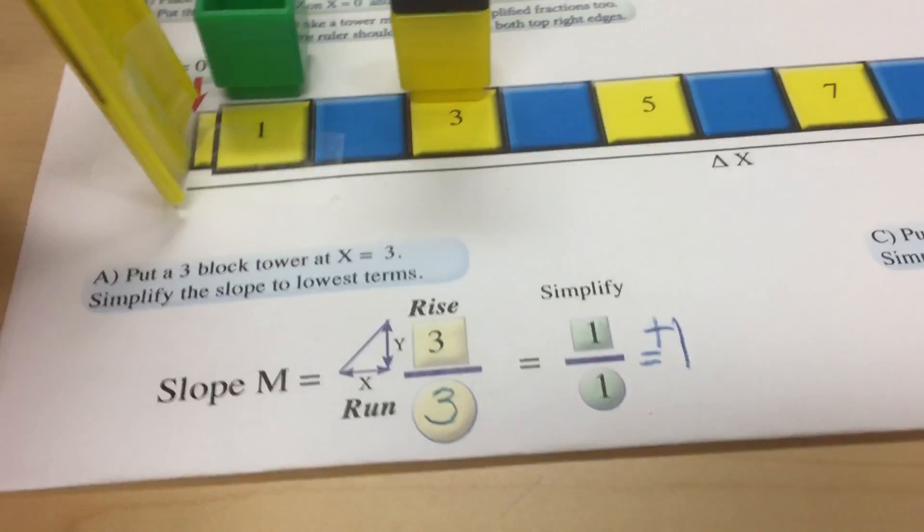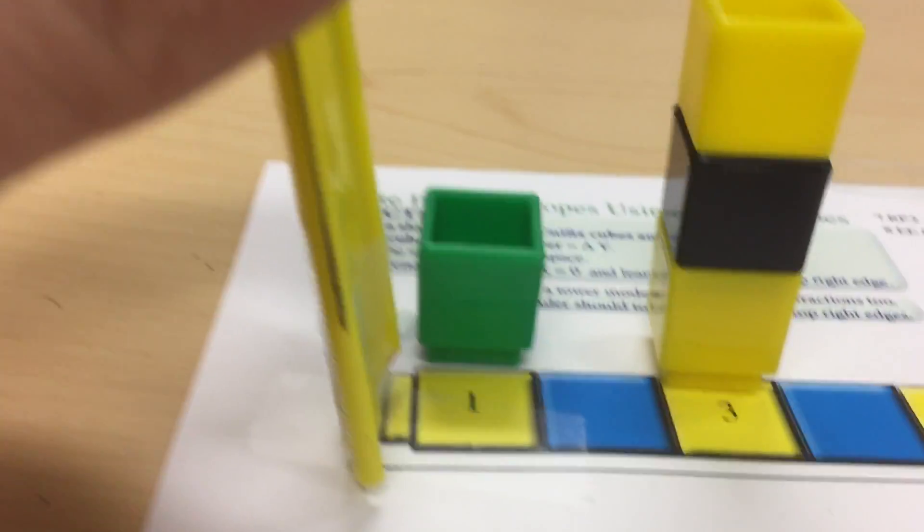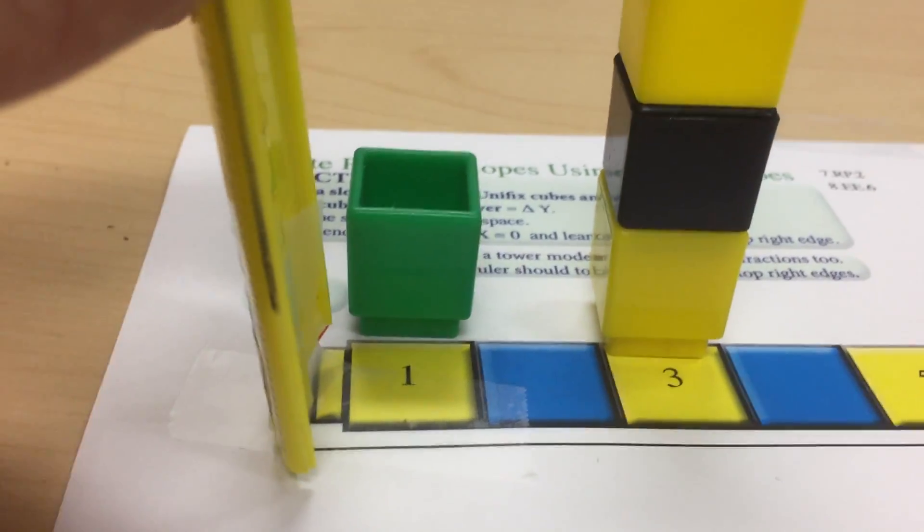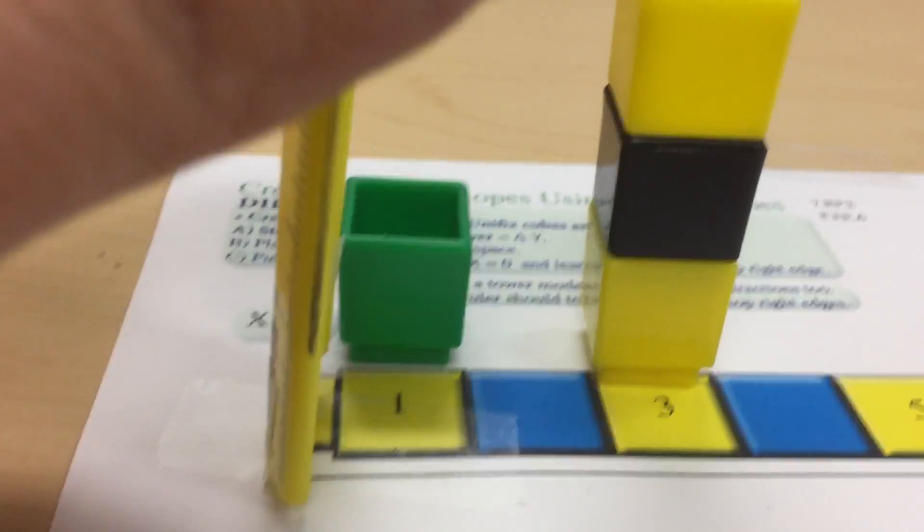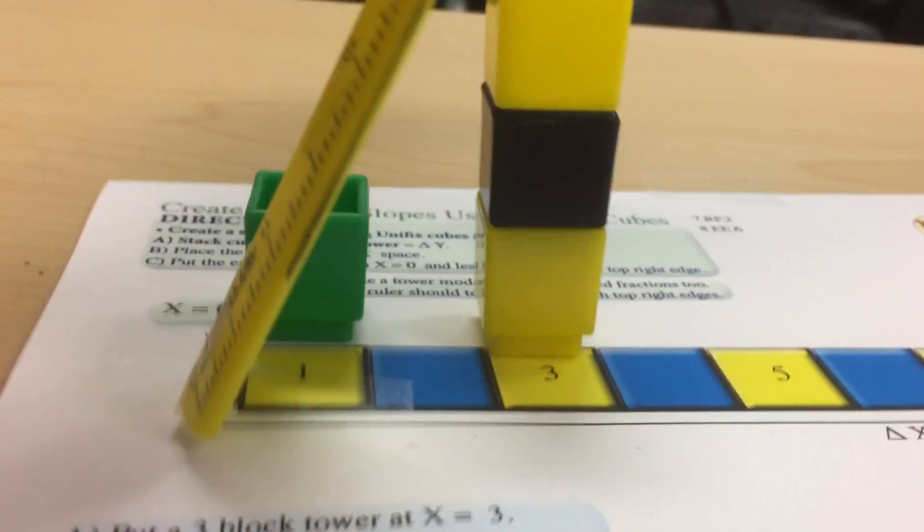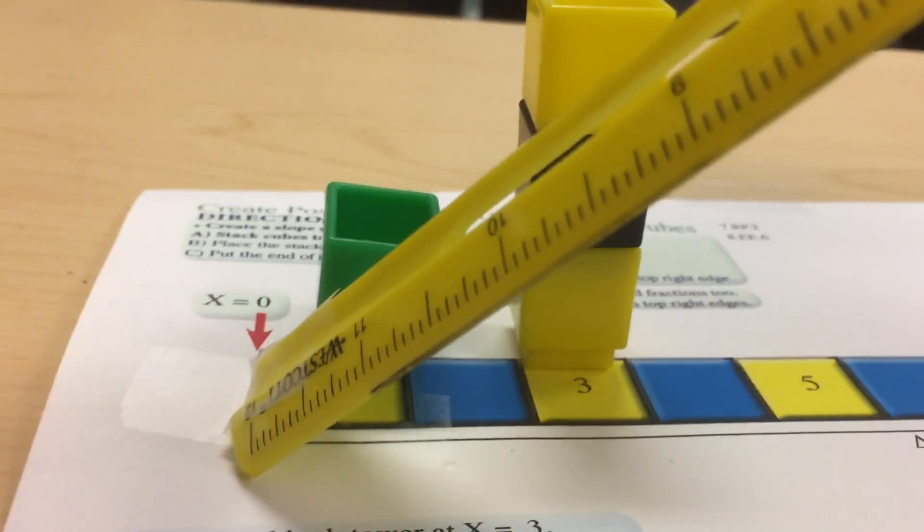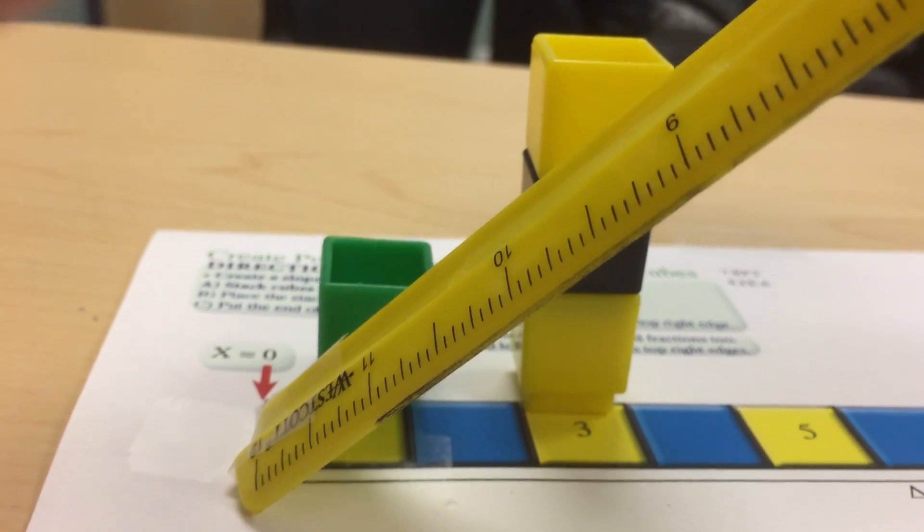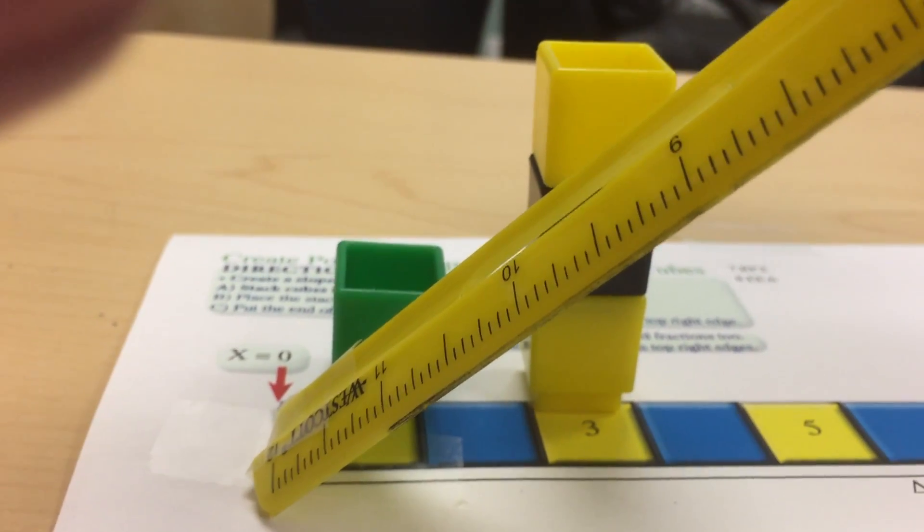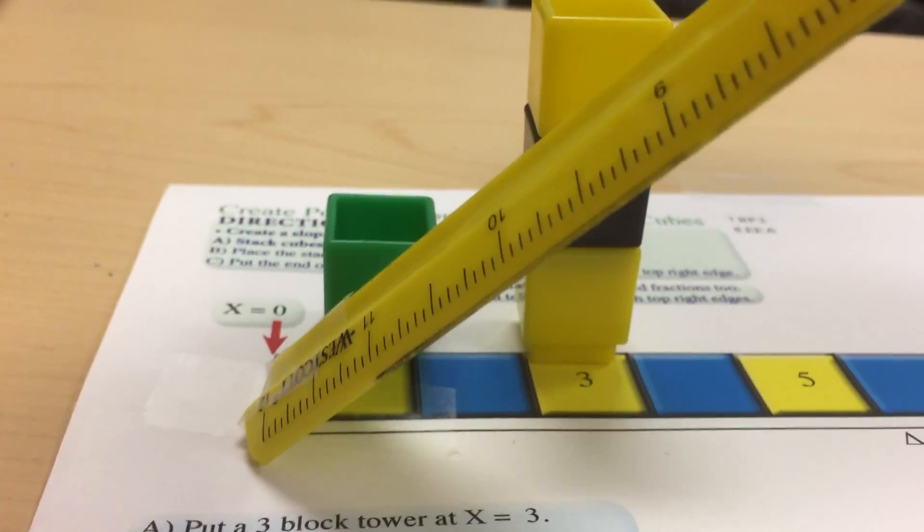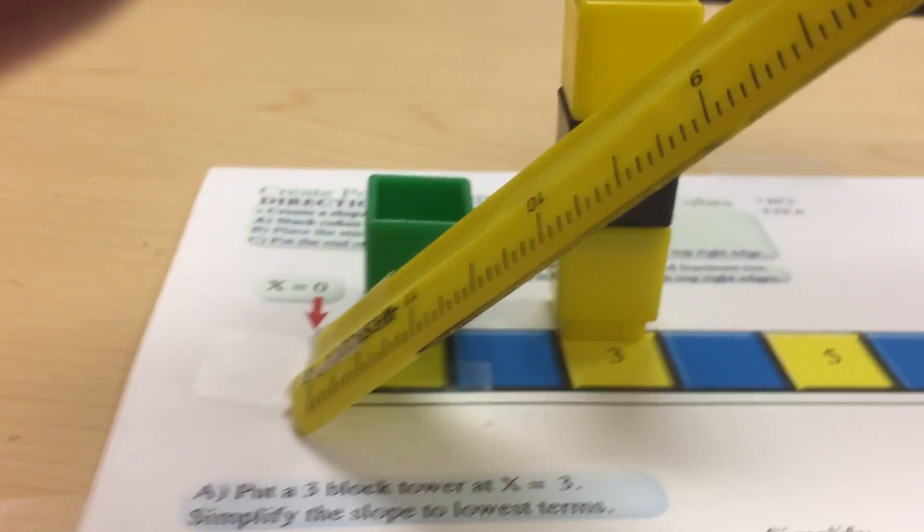A slope of one over one or one can also be made by placing one of these towers by running one and rising one. That's what this green cube is doing. Now notice when I move and connect this line that the top upper right hand corners are matching on this line because the slopes are the same. So a slope of three-thirds is the same as the slope of one over one. Both have the slope of one.